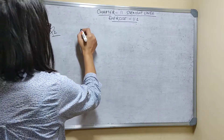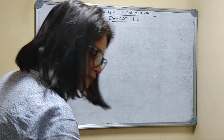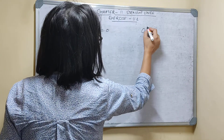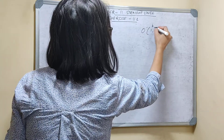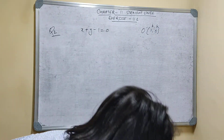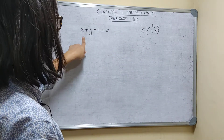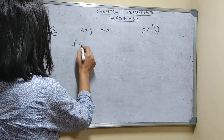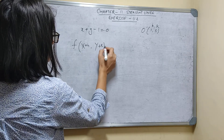Question 2: Transform the line X + Y - 1 = 0 to parallel axes through the point (1, 0). So the new origin O' = (1, 0), which means H = 1, K = 0. The equation will change: the curve whose equation was f(X, Y) = 0 will now become f(X + H, Y + K) = 0.